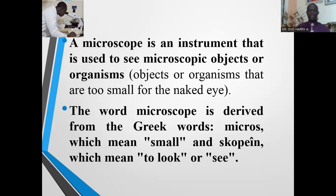The word microscope is derived from the Greek words 'micros,' which means small, and 'scopion,' which means to look. If you join these two words together, it means small to look. So organisms that are too small to be seen are microscopic.